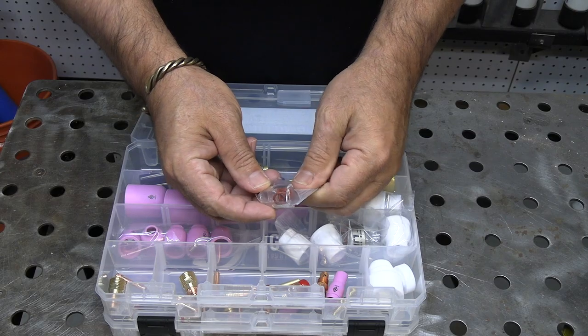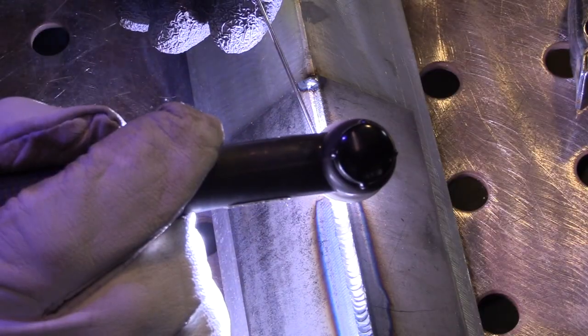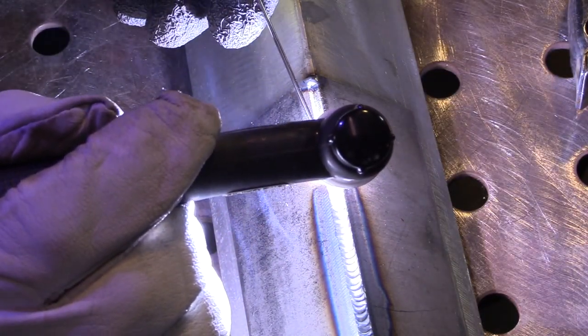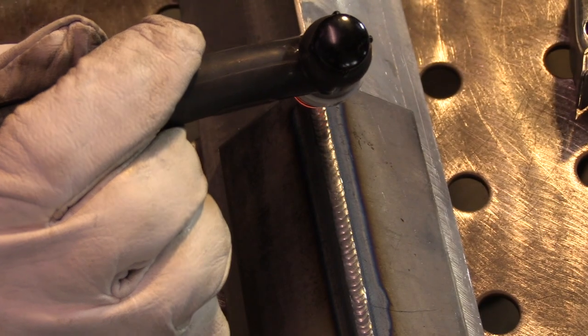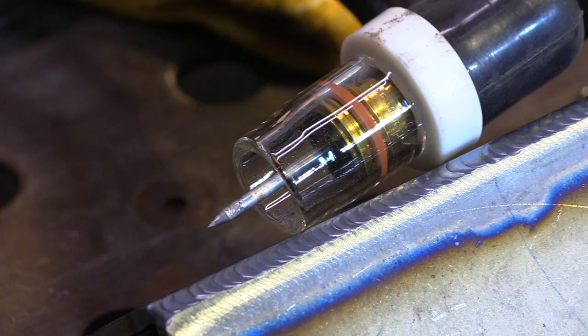The number eight clear pro that you saw me use earlier in this video is a great all around cup for steel, stainless steel, and aluminum. Lets you use a long stick out, but the main benefit that I have found is just great shielding and lets me see where I'm going.